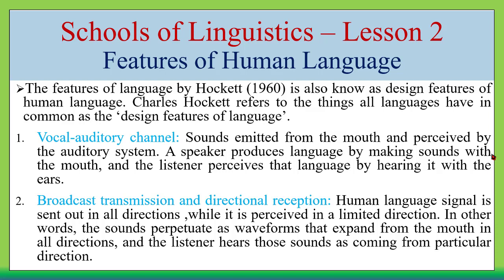The first feature is called vocal-auditory channel — sounds emitted from the mouth and perceived by the auditory system. A speaker produces language by making sounds with the mouth, and the listener perceives that language by hearing it with the ears. So when we talk, we produce language in the form of sounds from the mouth, perceived by the listener through the ears.